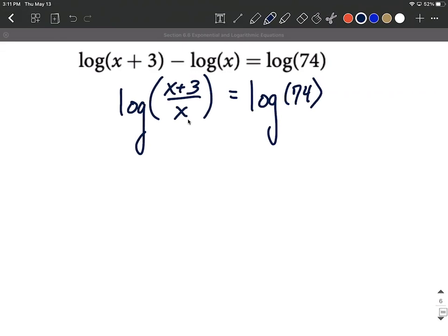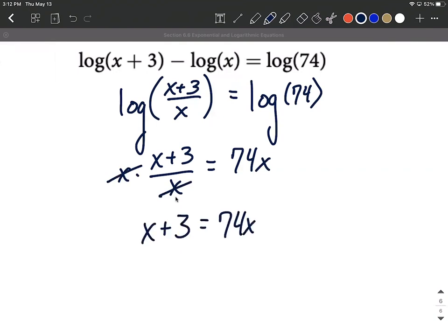Now let's work on dropping the logs because we have a single log on the left side, single log on the right hand side. We can say this is x plus 3 over x equals 74, and then to solve down for x we can't solve for x while it's in the denominator. So again, let's get rid of this fraction by multiplying both sides by x. So x plus 3 equals 74x.